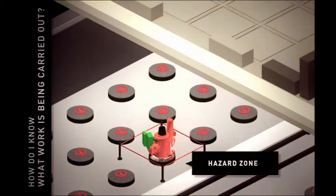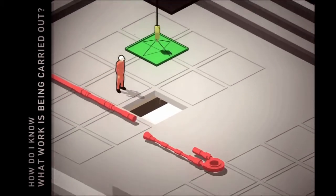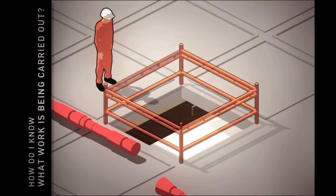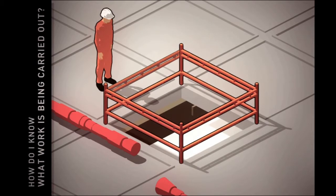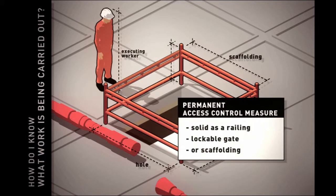Holes or openings that present a risk of personnel falling to a lower level shall be physically secured to prevent danger to personnel. These access control measures should be as solid as a railing.